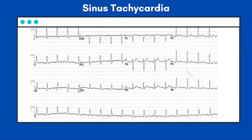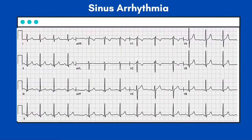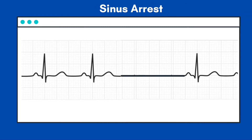Sinus tachycardia is characterized by an atrial depolarization rate of more than 100 per minute from the sinus node, with positive P wave vectors in leads 1, 2, 3, and aVF — it is faster than normal sinus rhythm. Sinus arrhythmia is defined as an irregular atrial depolarization rate of 60 to 100 per minute with sinus nodal origin, similar to NSR except there is PP interval variability. Sinus arrest is a pause of more than 0.2 seconds without identifiable atrial activity.